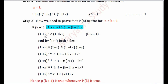To get k+1 in the exponent, we multiply both sides by (1+x). After multiplication, the left side becomes (1+x)^(k+1). On the right side, expanding (1+kx)(1+x): 1×1=1, 1×x=x, kx×1=kx, and kx×x=kx². So the right side becomes 1 + x + kx + kx². Taking x common from the last three terms gives 1 + x(k+1+kx), which rearranges as 1 + (k+1)x + kx².